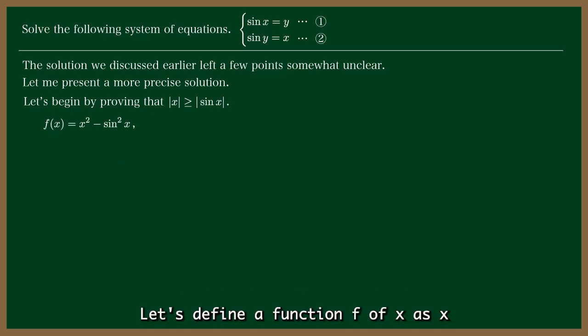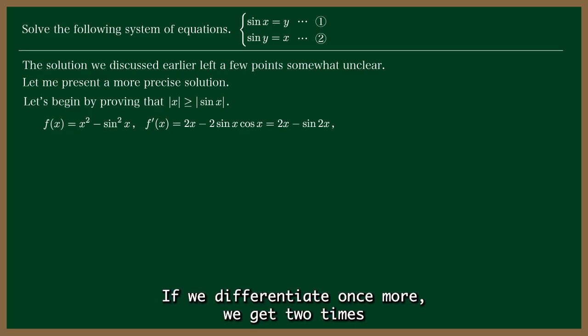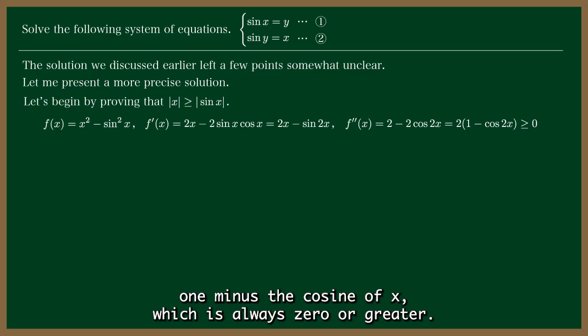Let's define a function f of x as x squared minus the square of the sine of x. When we take the derivative, we get 2 times x minus the sine of twice x. If we differentiate once more, we get 2 times 1 minus the cosine of 2x, which is always 0 or greater.